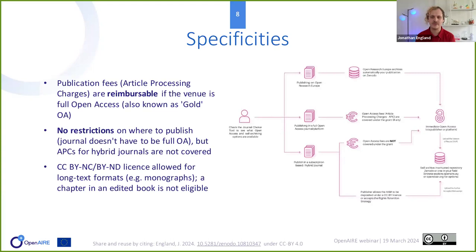Regarding publication fees: article processing charges (APCs) or book processing charges are reimbursable if the publishing venue is full open access. If it's a hybrid journal — a subscription-based journal that allows authors to publish in open access — you are allowed to publish there since there are no restrictions on where you publish, but the APCs would not be covered under the grant.